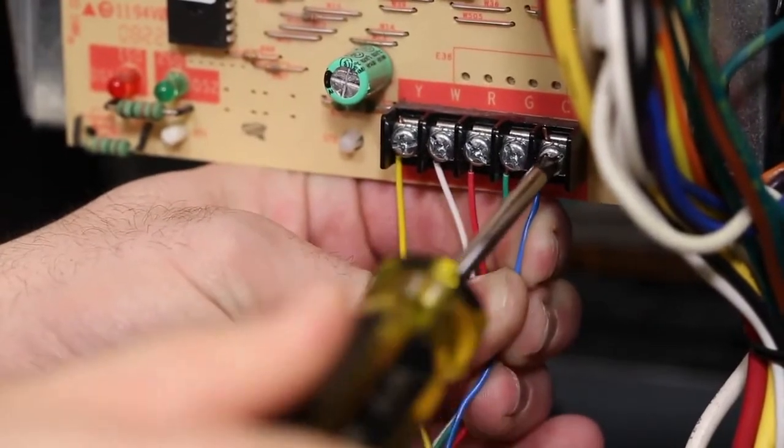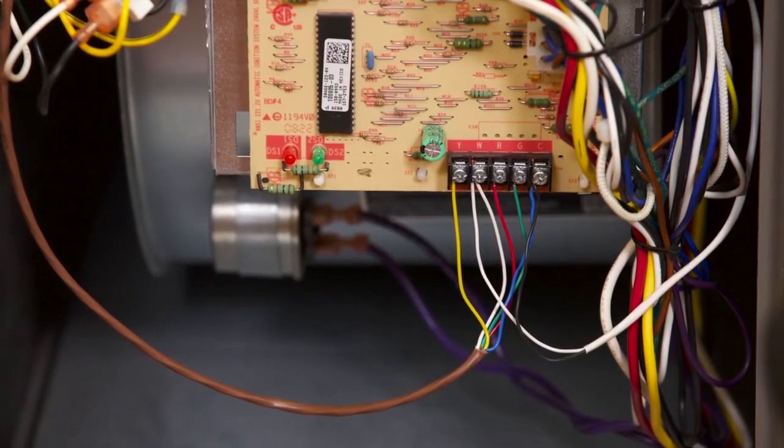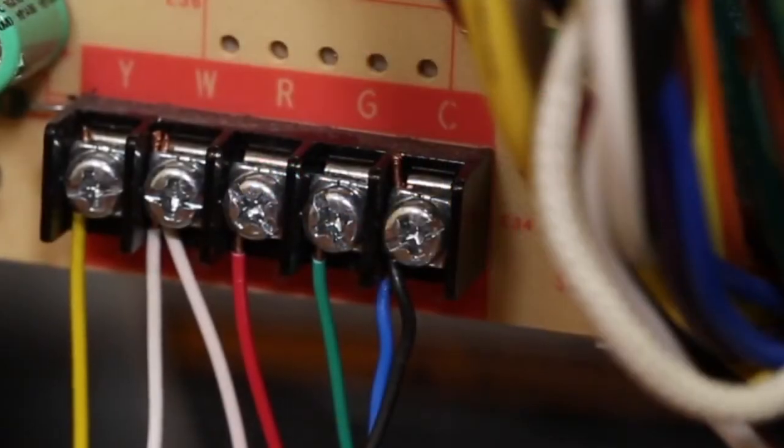When attaching this wire to the C terminal, note that there may already be a wire or wires connected to this terminal. For instance, if you have a humidifier, it may be connected to the C terminal.